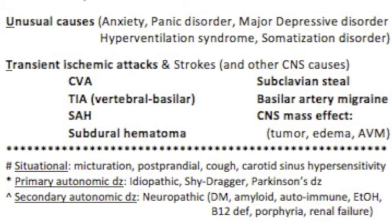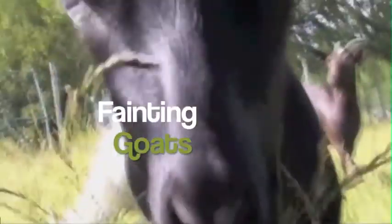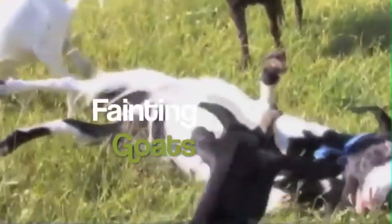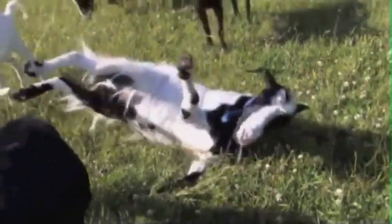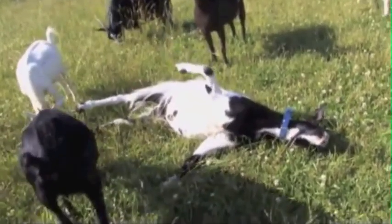Situational causes include micturition, postprandial, coughing, and carotid sinus hypersensitivity — often seen in men wearing ties. Primary autonomic disease includes idiopathic causes, Shy-Drager syndrome, and Parkinson's disease. Secondary autonomic disease includes neuropathic causes such as diabetes, amyloid, autoimmune conditions, alcohol, B12 deficiency, porphyria, and renal failure.